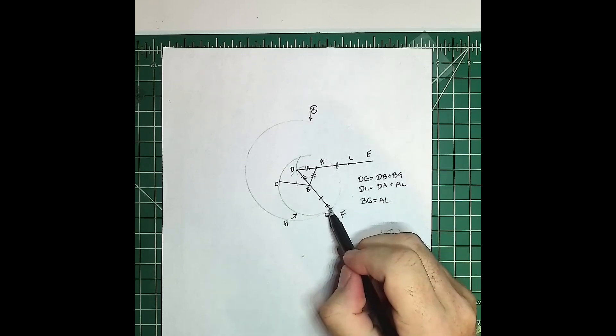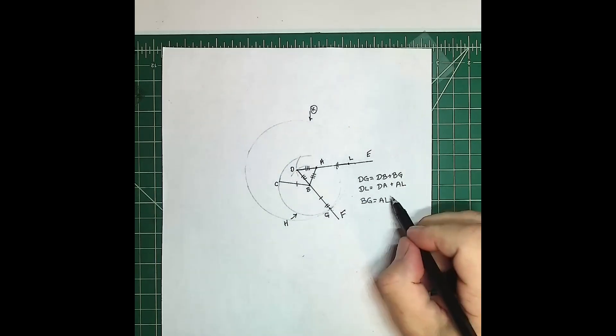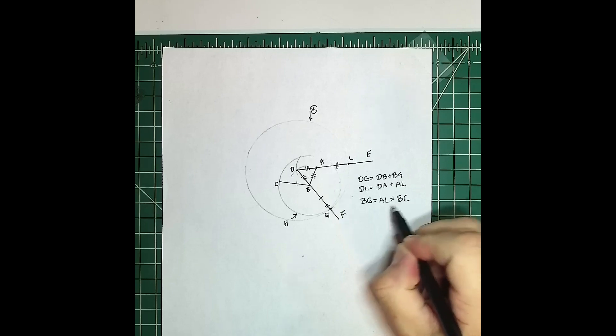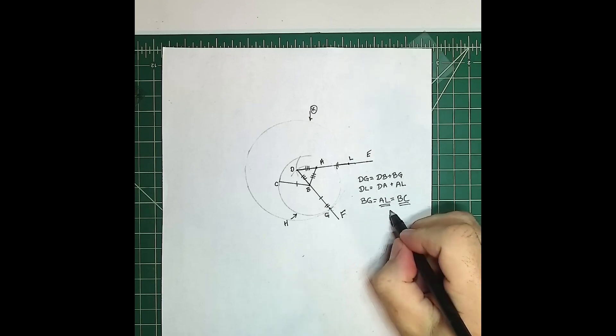And so what that says is that BG is equal to AL. So BG is equal to AL. But BG is a radius of the circle, and so is BC. So that says AL is equal to BC, which is dot dot dot. Henceforth we are done.